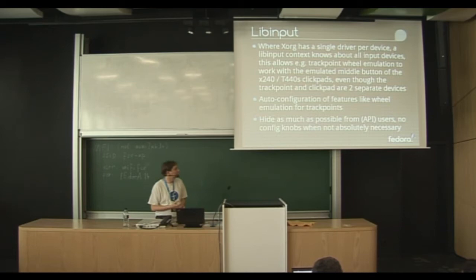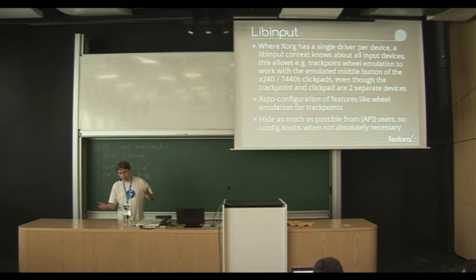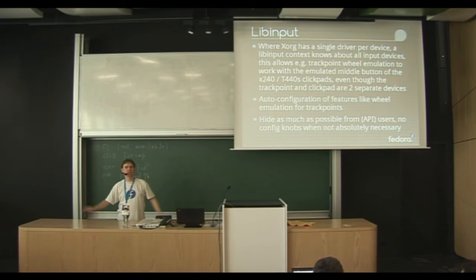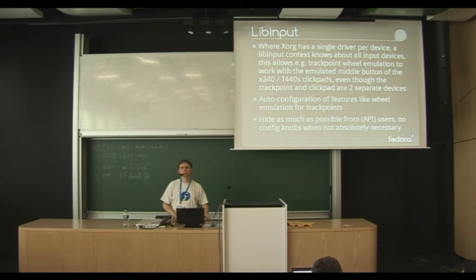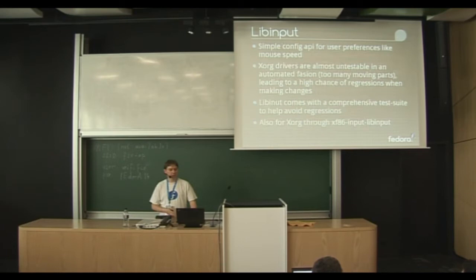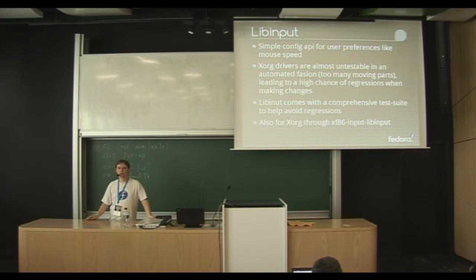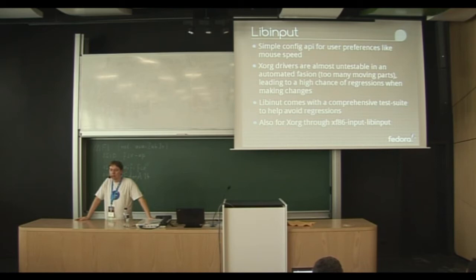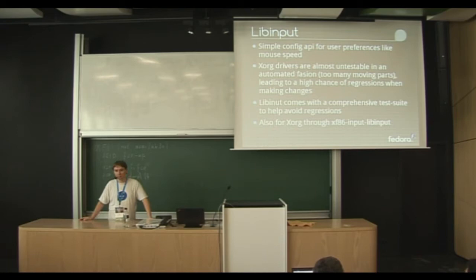We plan to hide as much as possible from API users and end users in terms of configuration knobs. X is full of crazy hacks because we didn't get heuristics right and just threw up our hands and added configuration option number 17 to stop a user from complaining. We no longer want to do that — we just want heuristics good enough that things work everywhere. There will still be a configuration API for user preferences like mouse speed, and mouse speed actually is a problem.